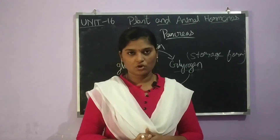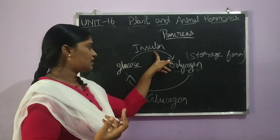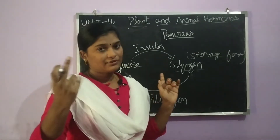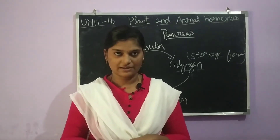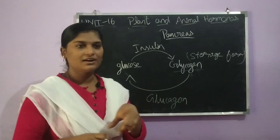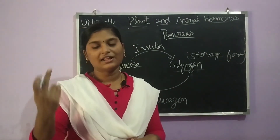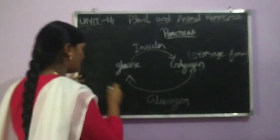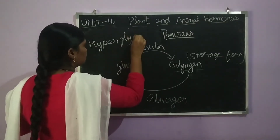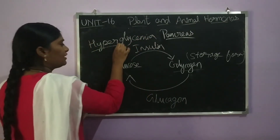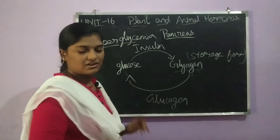When insulin is deficient and not released properly, the blood glucose level increases. This increased blood glucose level is called hyperglycemia. 'Hyper' means higher and 'glycemia' means glucose — so hyperglycemia means higher glucose level in the blood. This is the first characteristic of diabetes mellitus.